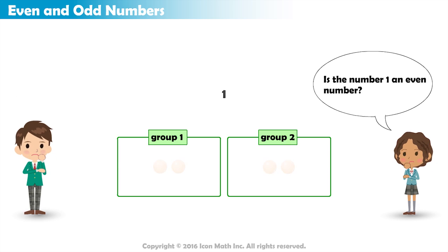What about the number 1? Well, if we have one counter, we can't evenly split it into two groups. We will give one counter to one group and then have no counters left.